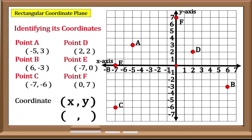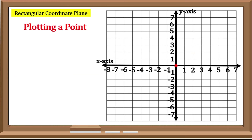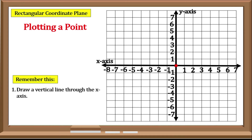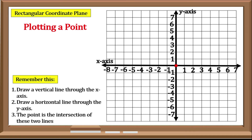This time we will be plotting a point — the coordinates of a point are given and we will plot the point. In plotting a point, remember these steps: 1. Draw a vertical line through the X-Axis. 2. Draw a horizontal line through the Y-Axis. 3. The point of intersection of these lines would be the position of our point.